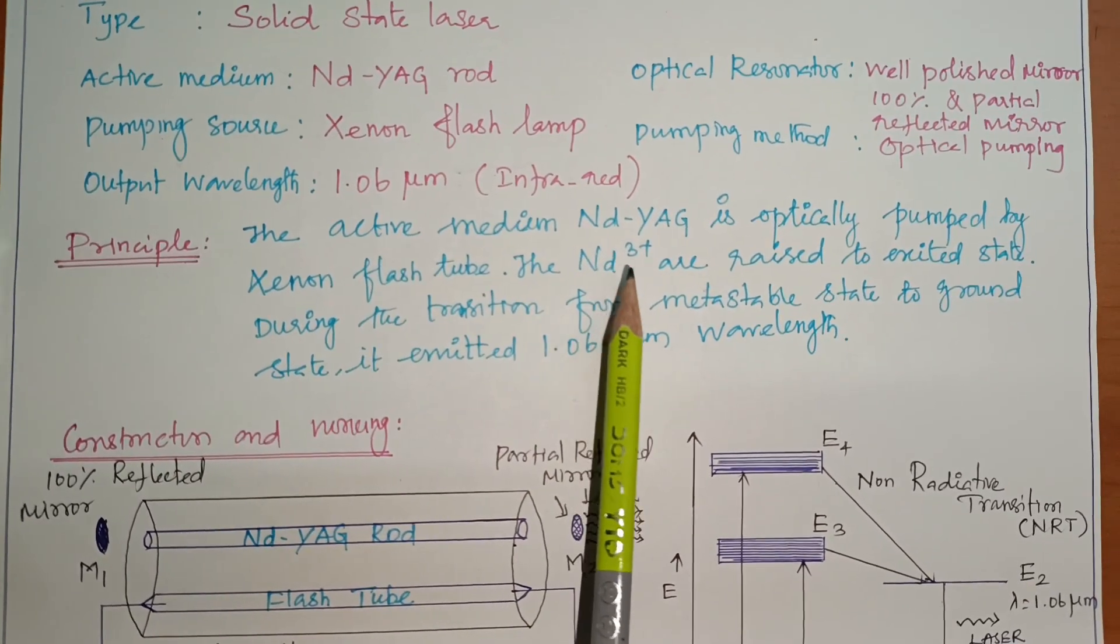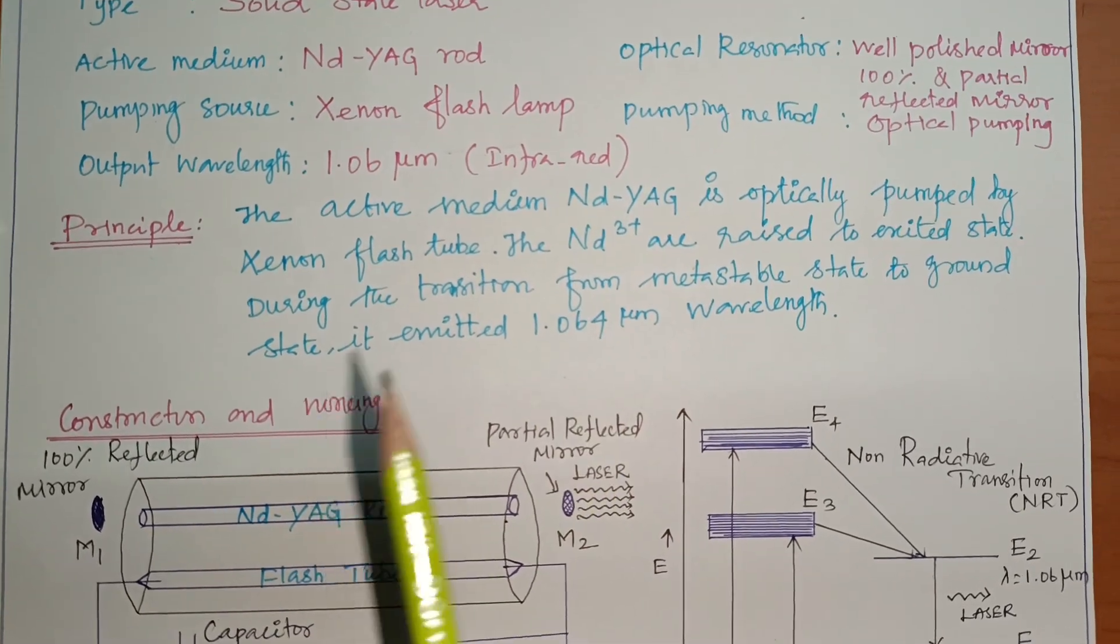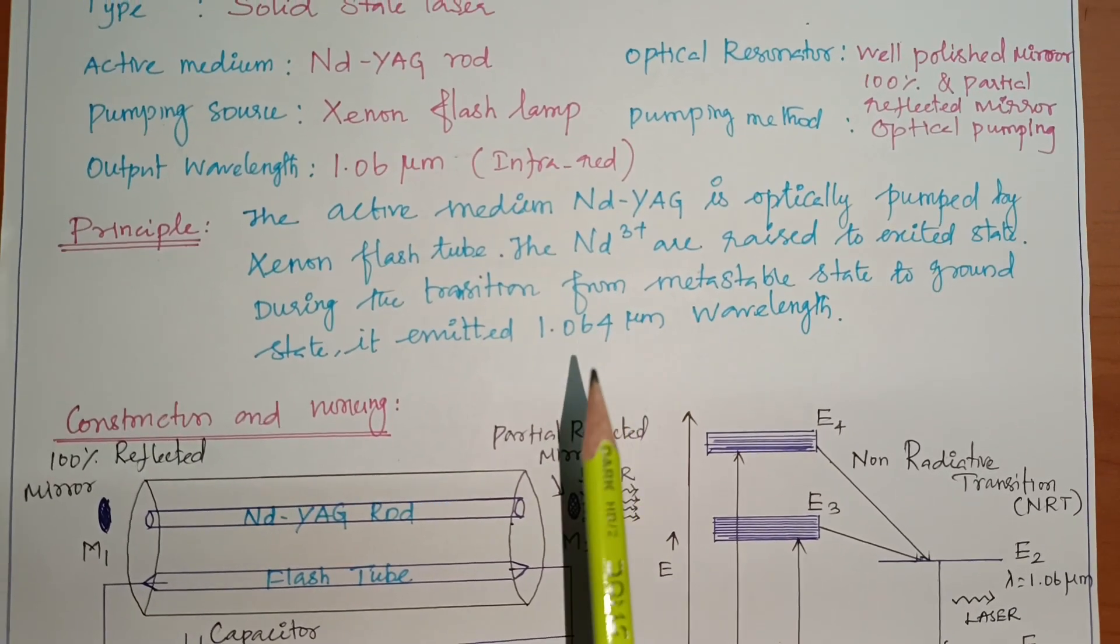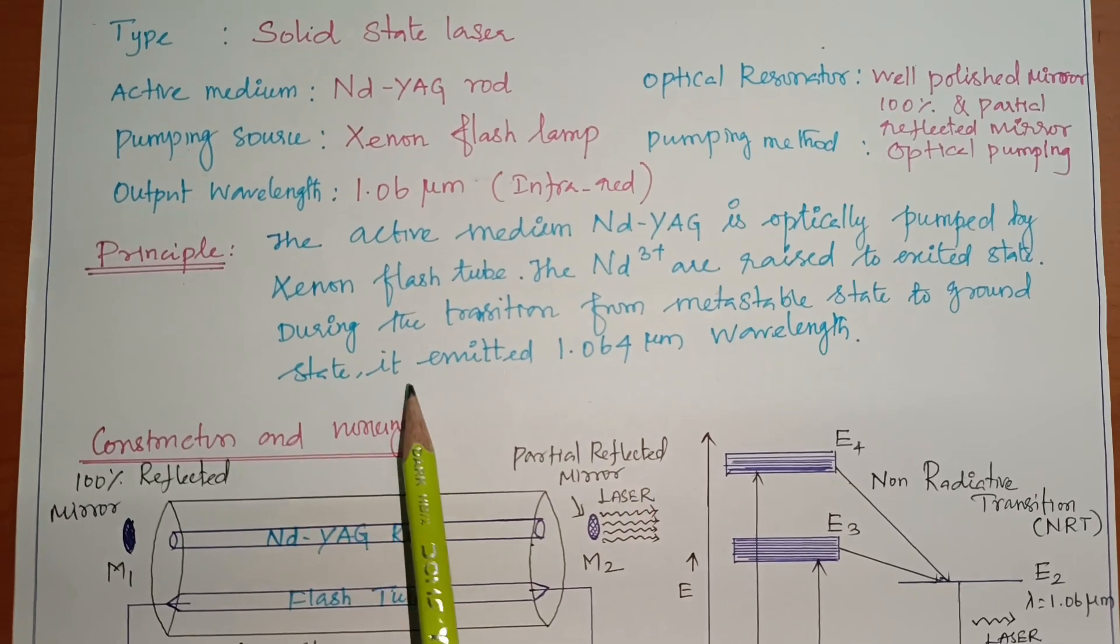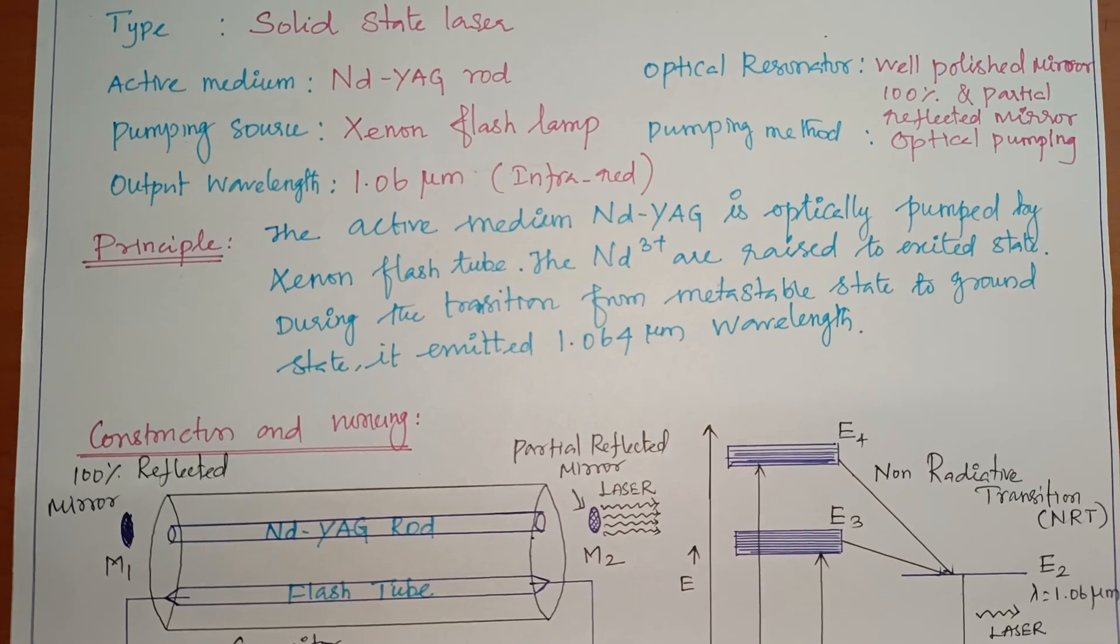So during the transition from metastable state to ground state, it emit 1.064 micrometer wavelength. It is a principle. So the active medium in the Nd:YAG is optical pumping. The Neodymium ions are in the excited state. The ground state is coming from the energy, the laser emit. That energy is 1.064 micrometer wavelength.